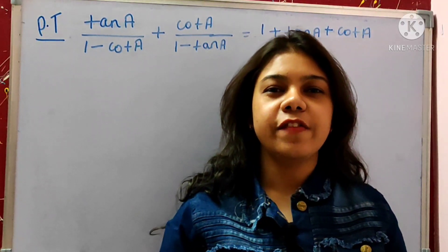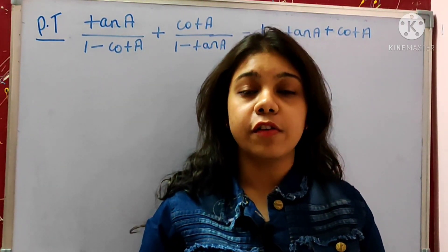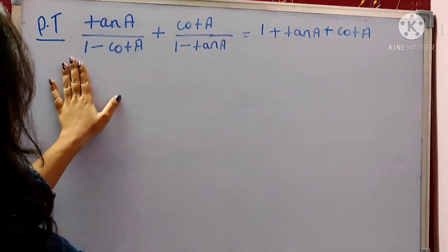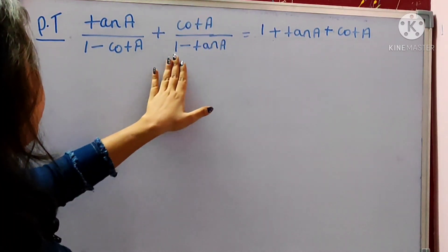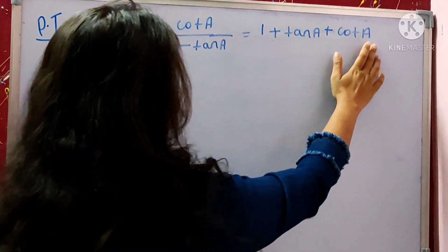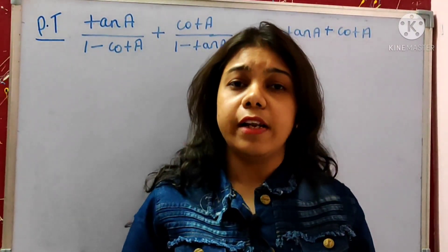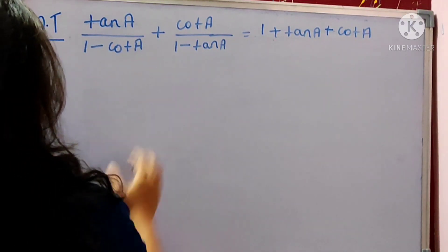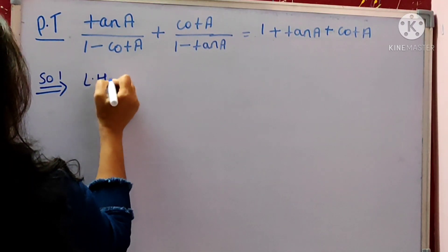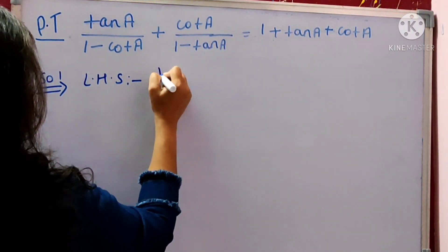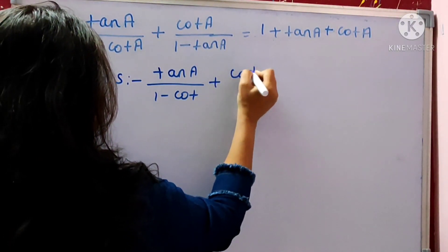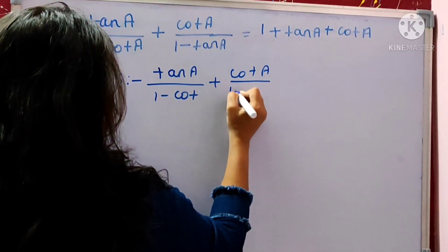Hello students, myself Ankita Shivari. Today's question is based on trigonometry. The question says: prove that tan A divided by (1 minus cot A) plus cot A divided by (1 minus tan A) is equals to 1 plus tan A plus cot A. We have to prove that LHS is equals to RHS. First of all, we are taking the LHS part: tan A divided by (1 minus cot A) plus cot A divided by (1 minus tan A).